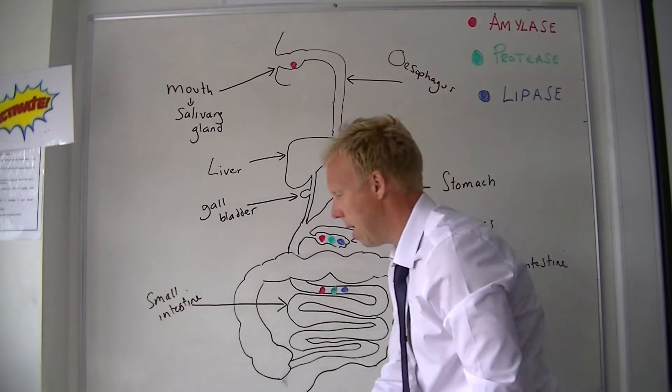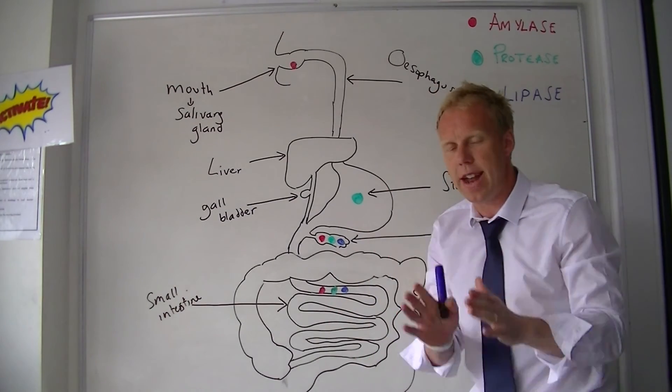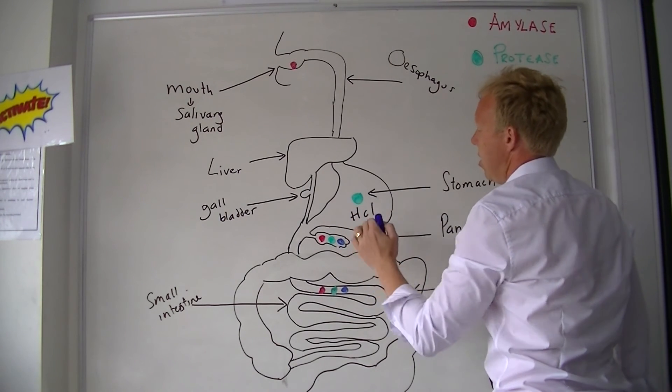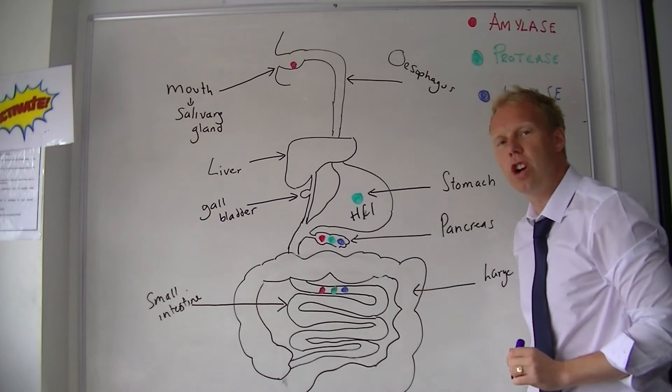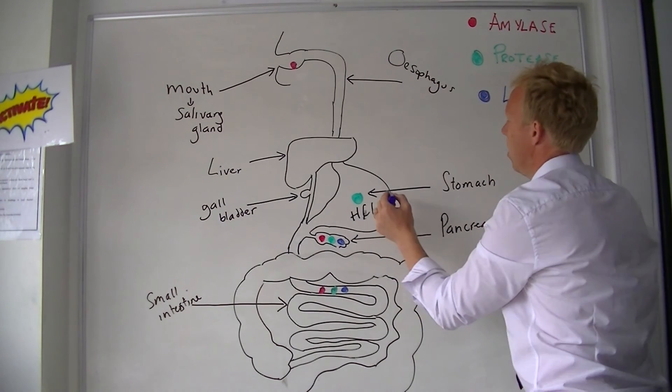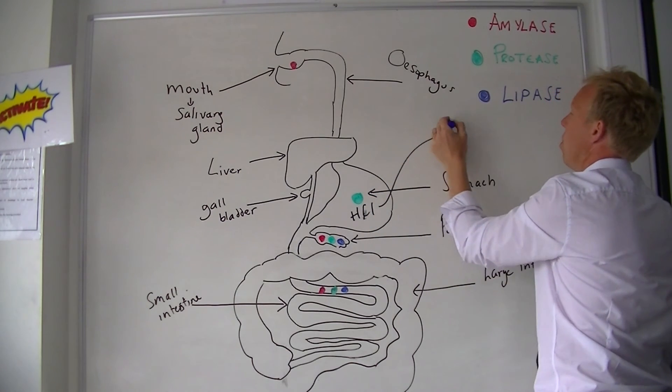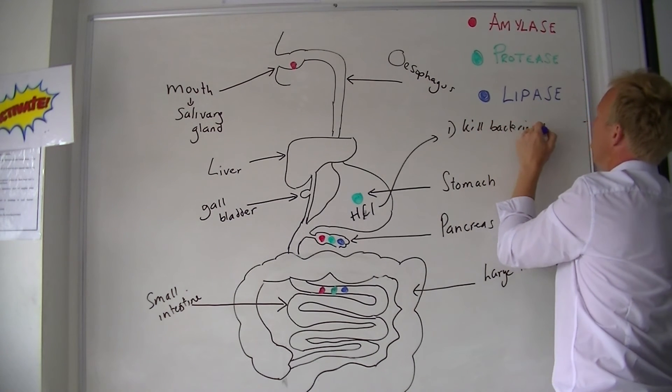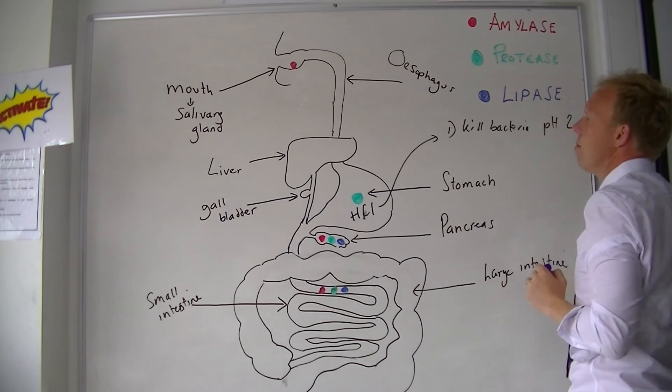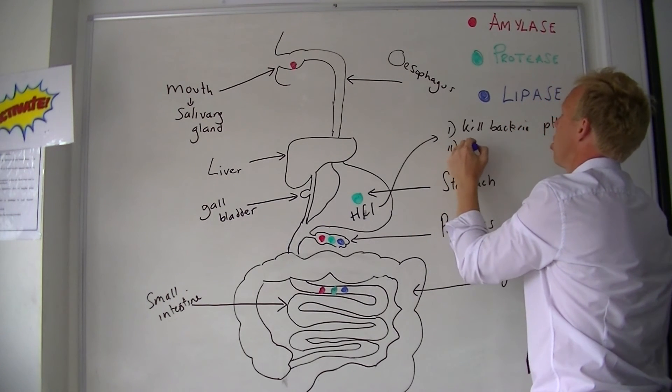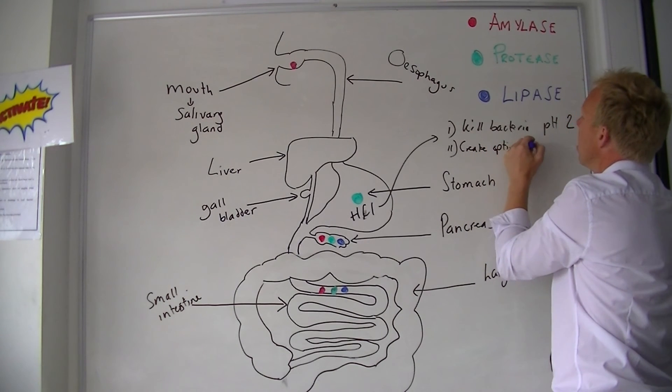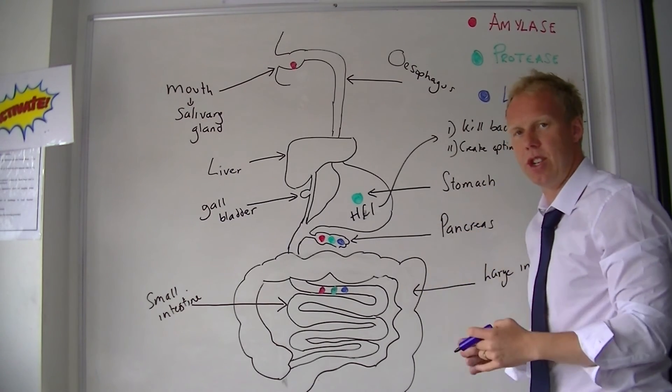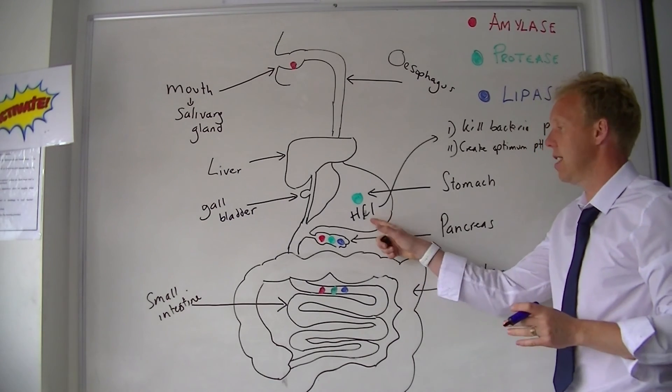Now, one more bit I need to tell you about. There are two more chemicals that you need to know about, but they're not enzymes, hence why I've left them until the end. In the stomach, there is hydrochloric acid. Two functions. The first function of hydrochloric acid is to kill bacteria due to its pH. And the second is to create the optimum pH for protease. Protease likes to work in acidic conditions—that's why hydrochloric acid is in the stomach.